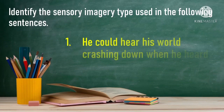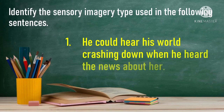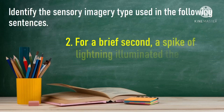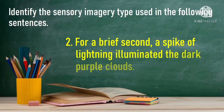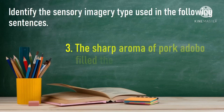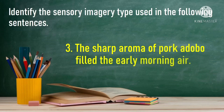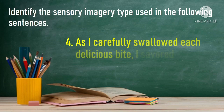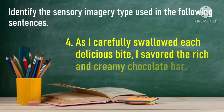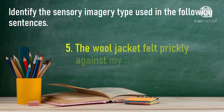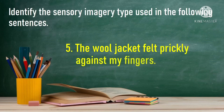Identify the sensory imagery type used in the following sentences. Number one: 'He could hear his world crashing down when he heard the news about her.' Number two: 'For a brief second, a spike of lightning illuminated the dark purple clouds.' Number three: 'The sharp aroma of pork adobo filled the early morning air.' Number four: 'As I carefully swallowed each delicious bite, I savored the rich and creamy chocolate bar.' Number five: 'The wool jacket felt prickly against my fingers.'